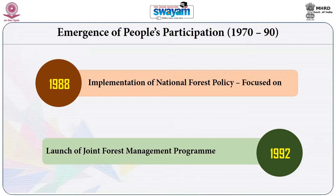A sea change took place in India's forest history in 1990 with the Joint Forest Management program, which called for collaborative management between communities and the forest department. This collaboration is responsible for deciding over the forest and preparing management plans. The Joint Forest Management recognized people's requirements and made it clear that communities should be permitted to procure and withdraw non-timber forest products from the forest, with certain terms and conditions.